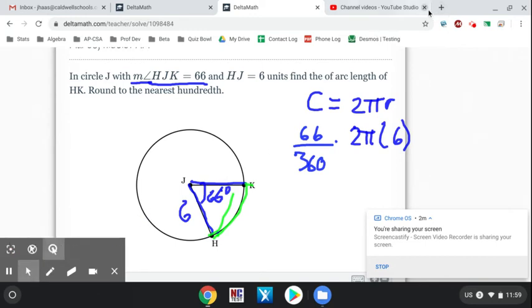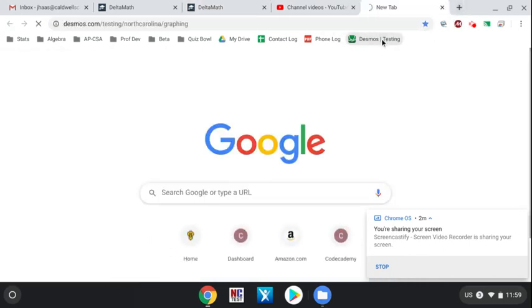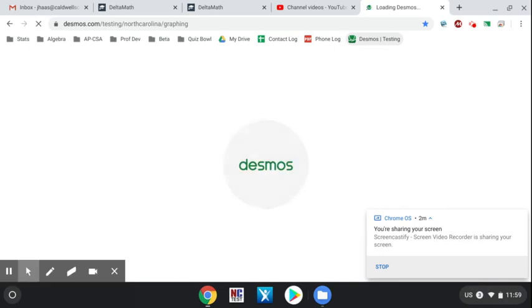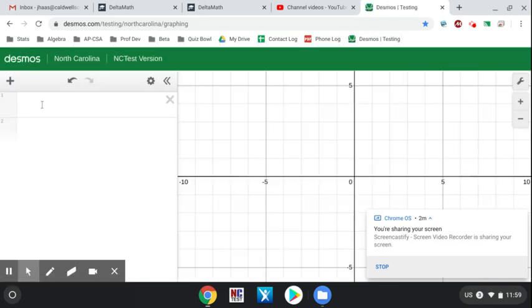type that into Desmos. Here we go. I've got my Desmos linked here, so I'm going to do 66 divided by 360